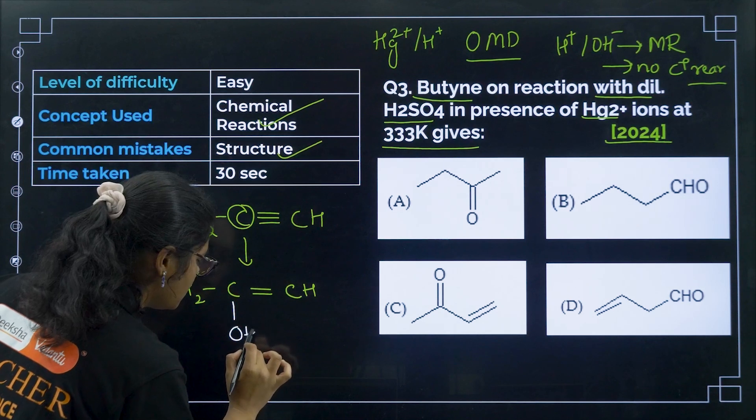Question 27: which statement about Cannizzaro reaction is correct? It is not a reaction of every aliphatic aldehyde — HCHO reacts but not all. The key condition is: the aldehyde must NOT have any alpha hydrogen. It is not dependent on whether the aldehyde is aliphatic or aromatic — the correct condition is absence of alpha hydrogen.